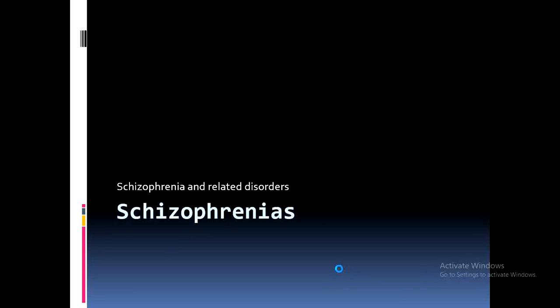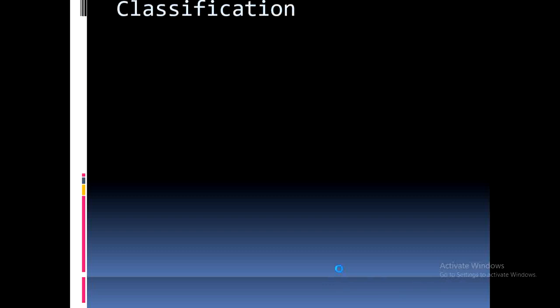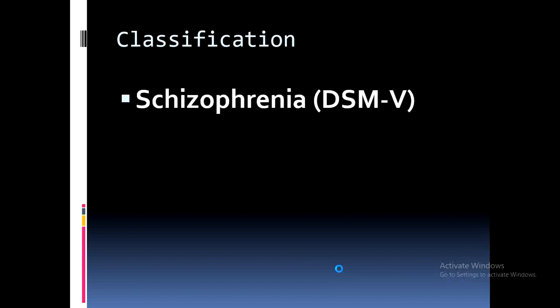This is our first learning module on schizophrenia. The term schizophrenia represents a spectrum of multiple disorders — schizophrenia is a single term but it encompasses various types of disorders clustered under that label. There are two major classification systems used worldwide.